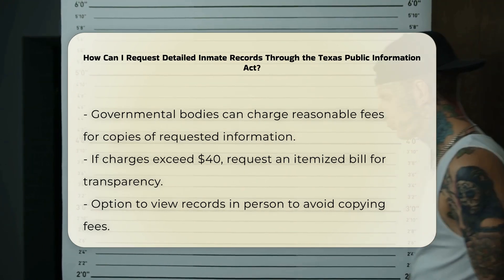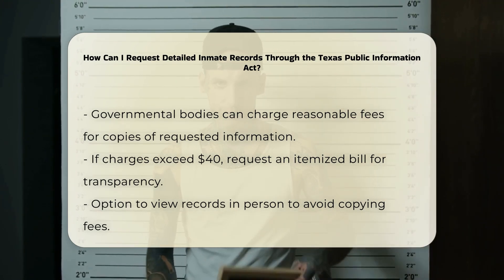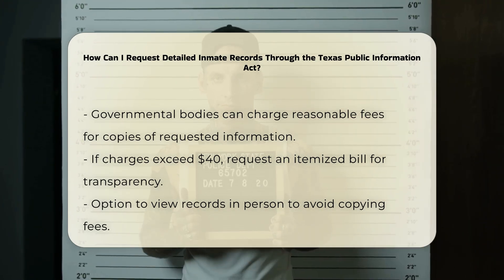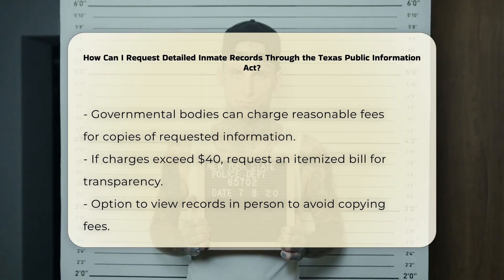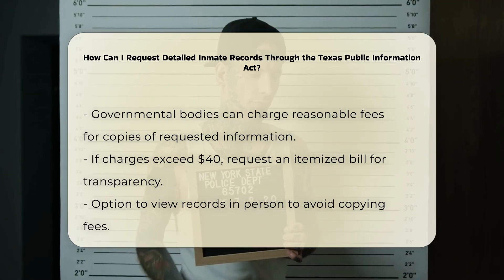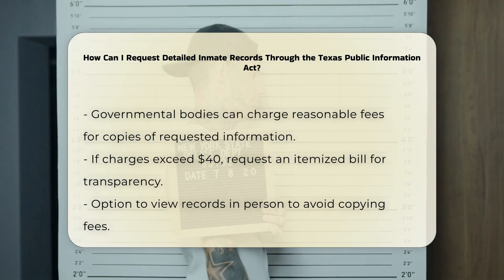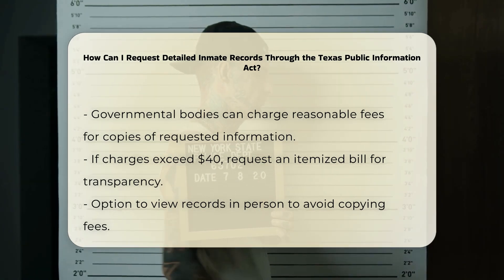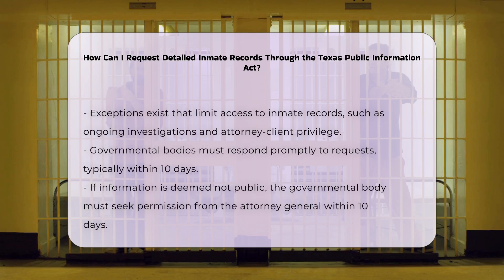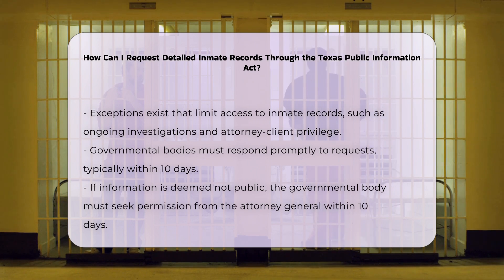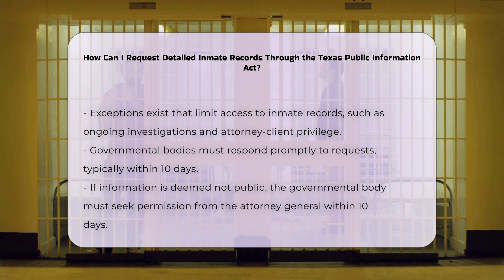Exceptions and limitations: There are several exceptions that may limit the availability of inmate records. For instance, the Texas Public Information Act has a carve-out that generally does not allow information about an inmate to be released, except for details like their location, reason for incarceration, and potential release date. Other exceptions include information related to ongoing investigations, competitive bids, trade secrets, and certain legal matters involving attorney-client privilege.